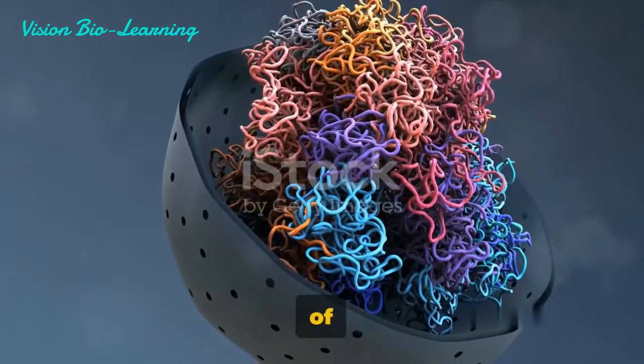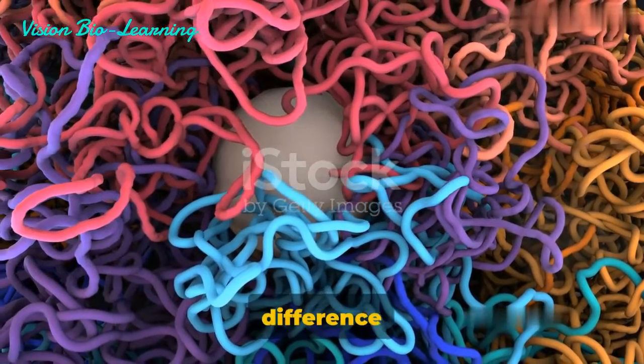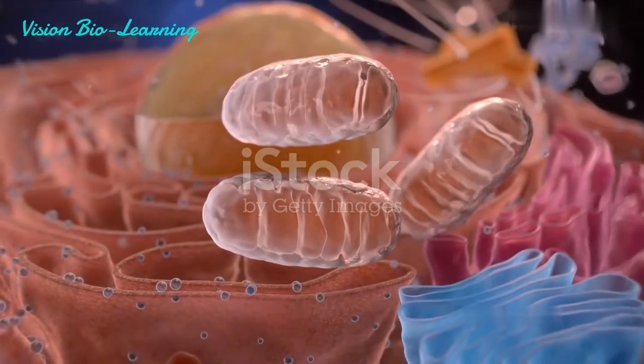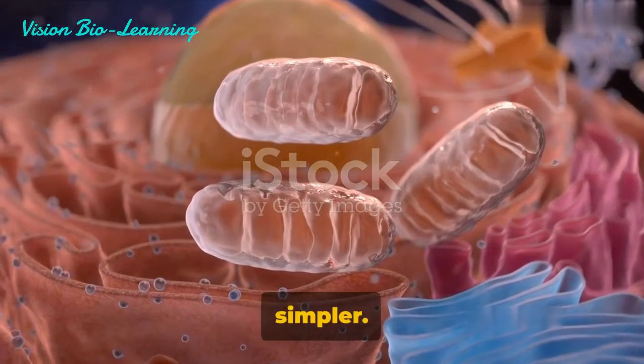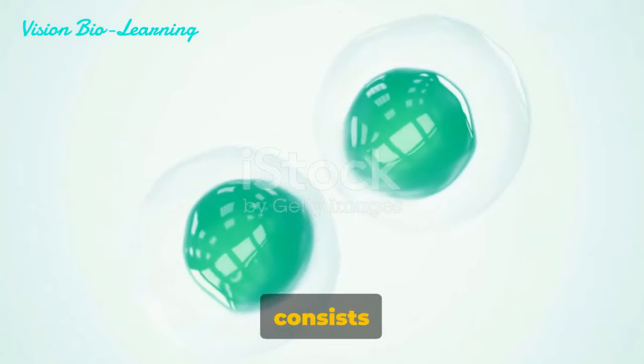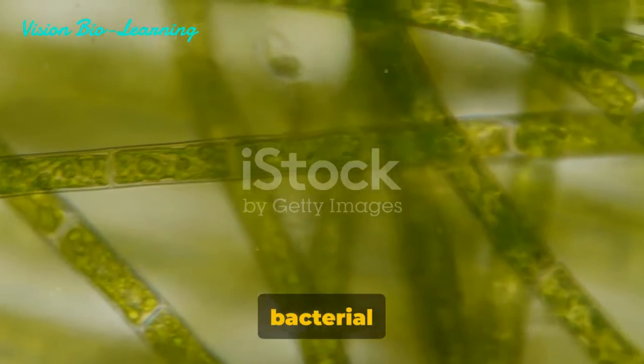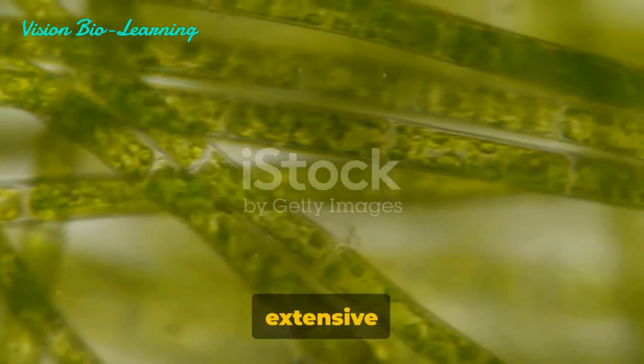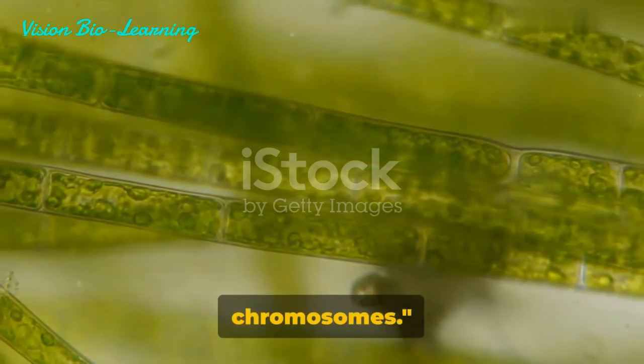Now, it's worth noting a key difference here. While the nuclear DNA forms these complex structures, the DNA in mitochondria and chloroplasts is a bit simpler. This DNA, which is separate from the nuclear DNA, consists of double-stranded circular molecules that resemble bacterial chromosomes. Through these three levels of packaging, the extensive genomic DNA in a eukaryotic cell is neatly packaged into chromosomes.